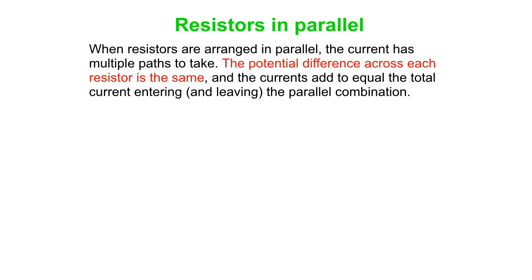That brings us to resistors in parallel. So when we have resistors in parallel, we're giving the current multiple paths from which to choose from. The potential difference across two or three or five resistors in parallel is the same. And the currents split up, but they add together to be the total that was coming in and leaving.